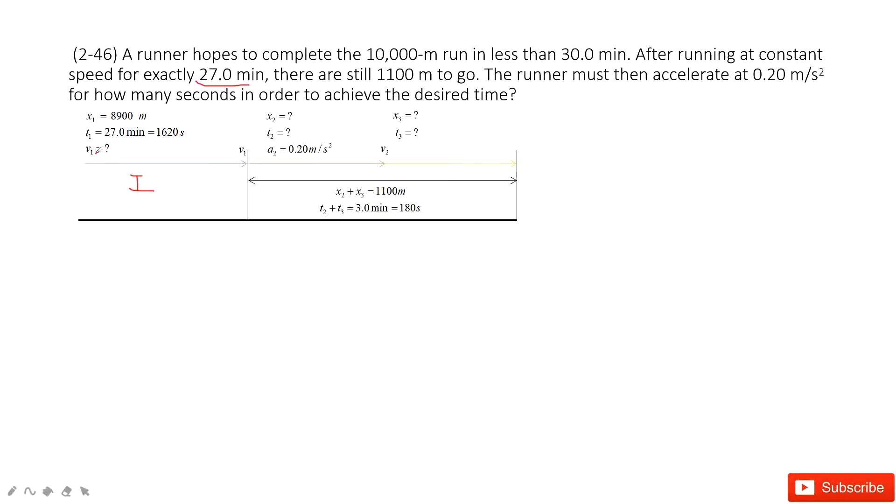Therefore, it's very easy for us to get the velocity v1. And then the runner must accelerate with the given acceleration, 0.2 meter per second squared.